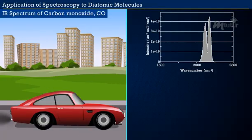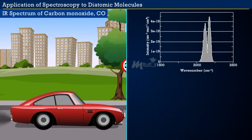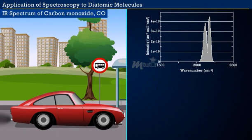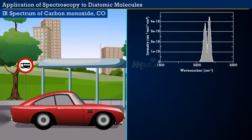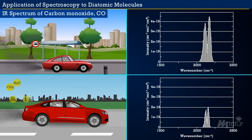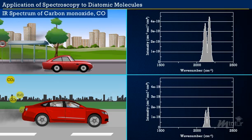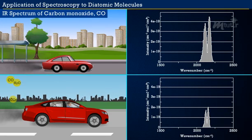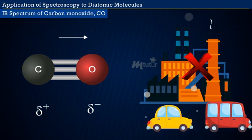IR spectrum of carbon monoxide: An exhaust gas mixture from an old-time car without catalytic cleaning shows a high CO peak. Nowadays, a modern car exhaust contains mostly carbon dioxide and water, and the carbon monoxide concentration is very low. As CO is polar, it can be detected by IR spectroscopy in motor exhausts, which helps to control air pollution.